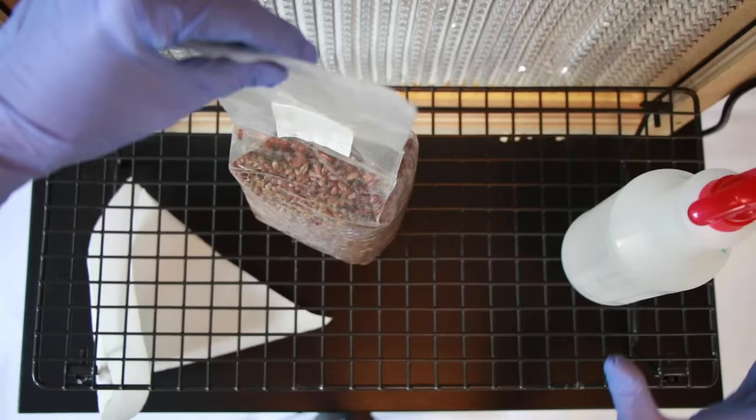Sometimes you don't have agar or a microscope in order to look for contamination. So at that point, you just have to go with it and hope that they're clean. To start, it's best to be in front of a laminar flow hood or in a sterile air box. If you don't have one, turn off your AC and your furnace and use your bathroom.